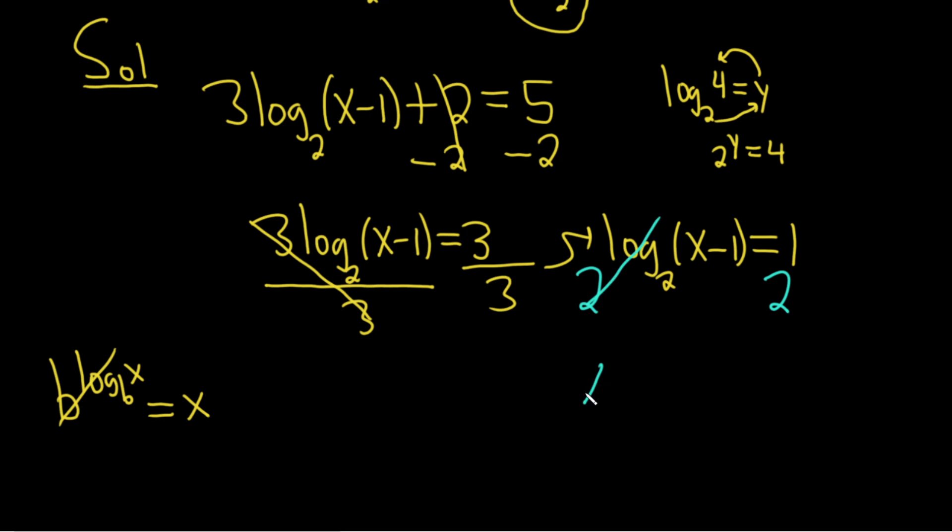So we get x minus 1, and that's equal to 2. And we just add 1 to both sides, plus 1 plus 1. So x is equal to 3. And that would be the solution to this problem. So x is equal to 3.